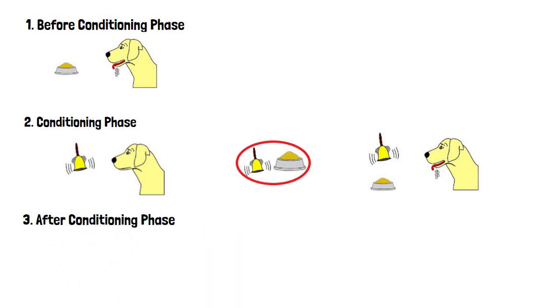3. The after conditioning phase. The conditioned stimulus alone triggers the conditioned response. The bell causes salivation on its own, without food.